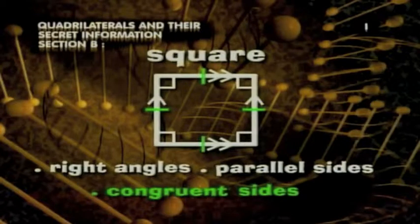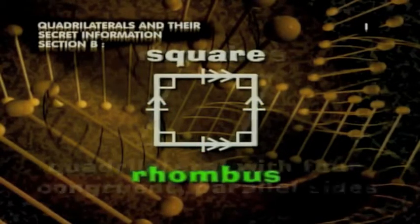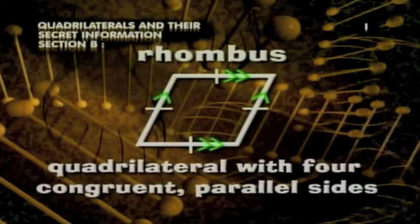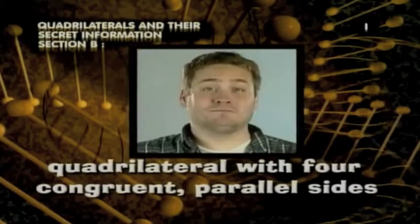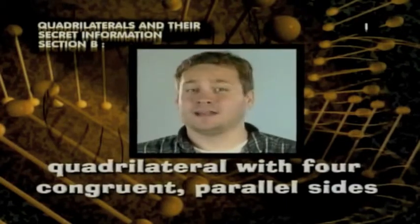A square is a form of rhombus. A rhombus is any quadrilateral with four congruent parallel sides. And by the way, the plural form of rhombus is rhombi.